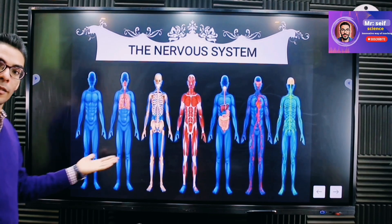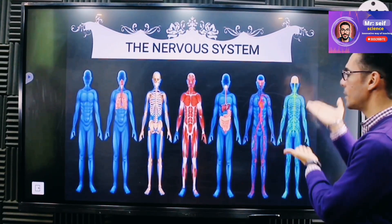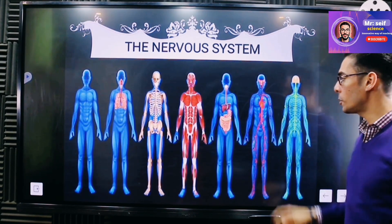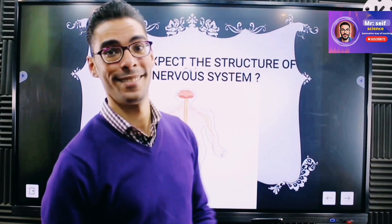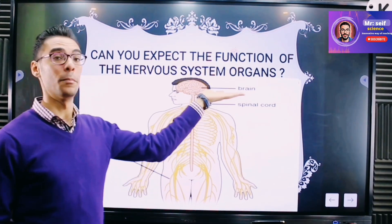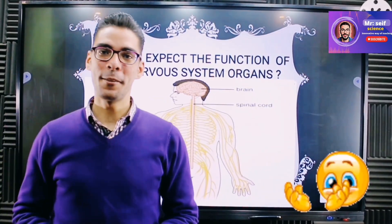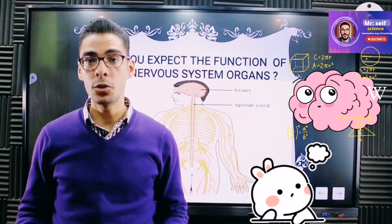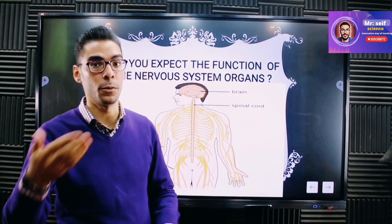Our body is full of systems, but the one responsible for processing information and understanding what is happening is the nervous system, which is made up of the brain and other organs. We have three main organs. First: the brain. Its location is inside the skull, in the head. What's the function of the brain? It's the main control center of the body — it processes information, understands, translates, helps you in everything, and gives orders.